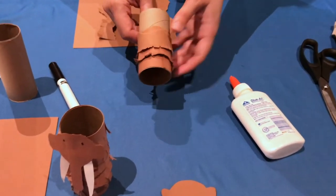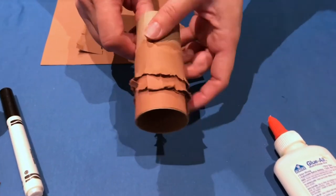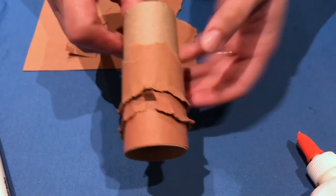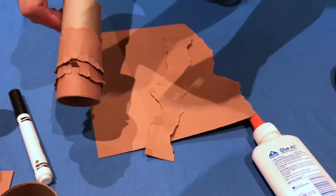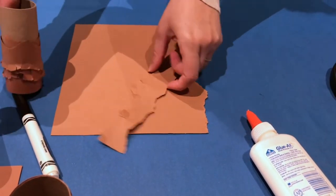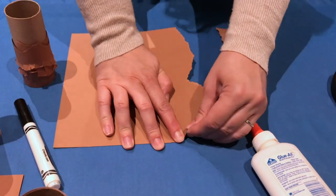I've already started here by wrapping some of the brown paper around the cardboard tube. So after you've cut out your head, just take the rest of your paper and you're going to tear it into strips.